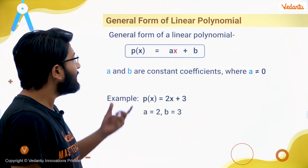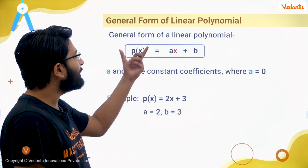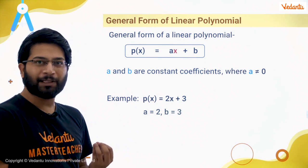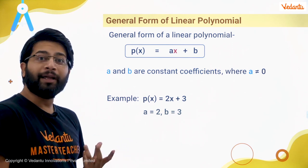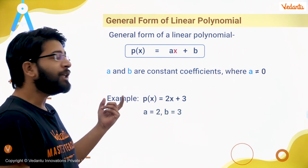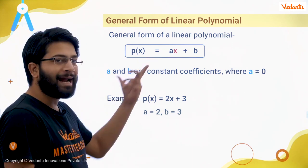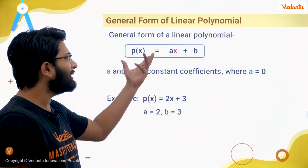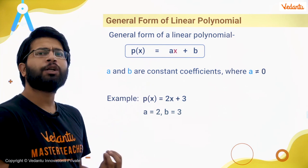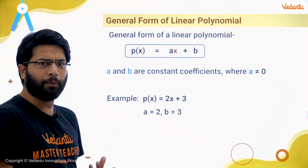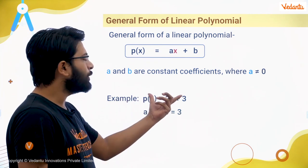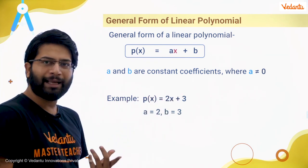We know that a linear polynomial can be represented by ax plus b, where the coefficient of x cannot be zero. Otherwise it will be a constant polynomial. The example is 2x plus 3.